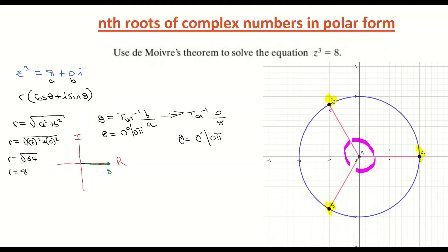Filling in our complex number in polar form: z³ = 8(cos 0π + i sin 0π). There's our complex number in polar form.